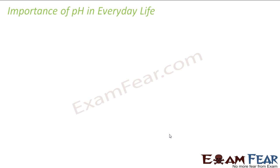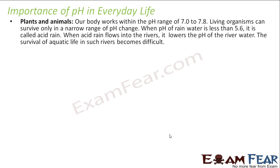Now let's see the importance of pH in our daily life. Acid and base are defined by hydrogen ions and hydroxide ions, and we have this pH scale. Plants and animals have a pH range of 7 to 7.8, meaning they are mildly basic. We also have a mildly basic tendency — our body parts and teeth are all slightly basic. Living organisms can survive only within this pH range; if you put an animal in acid, it will die.